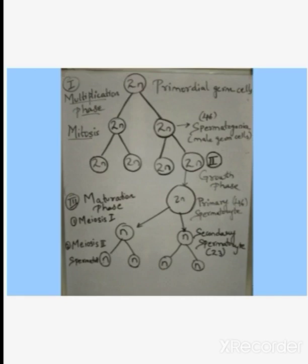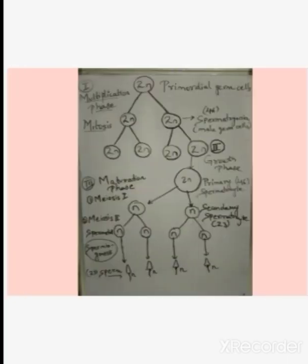So spermatids are formed. The key feature is that they are quite heavy and they are non-motile because they contain nucleus, Golgi bodies, mitochondria, and centrioles. So they are heavy. This is the first stage, that means formation of spermatids is complete.